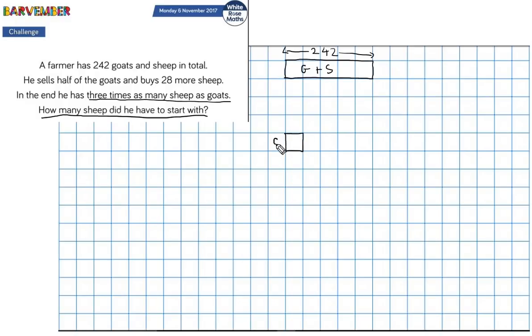I'm going to use one of these squares as my base unit. This is going to represent the number of goats that he has in the end. And if that's the number of goats, let's draw the sheep. One, two, three.